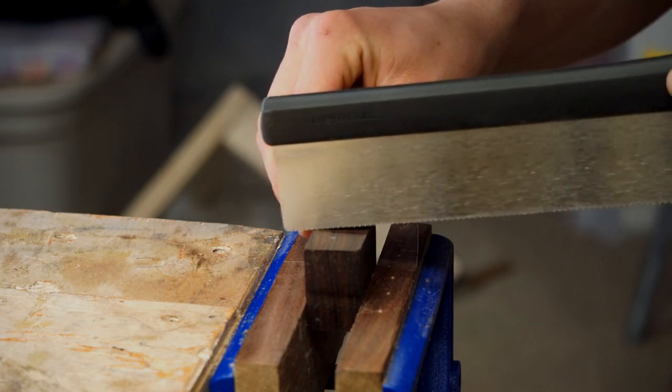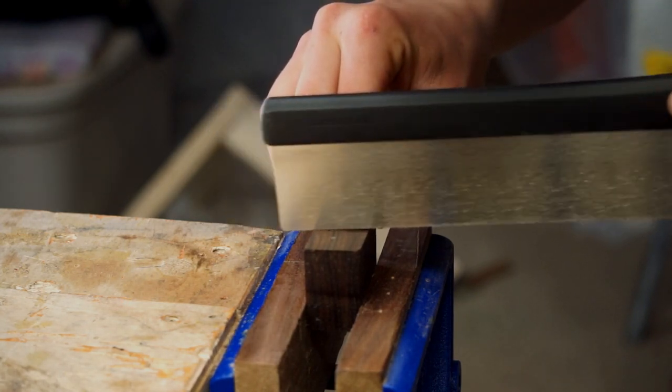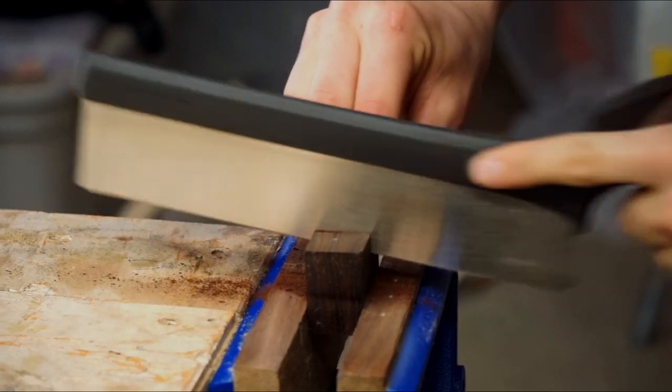I'm using my dovetail saw to cut this off-cut in half. It has ripping teeth, which work great for cutting along the grain.